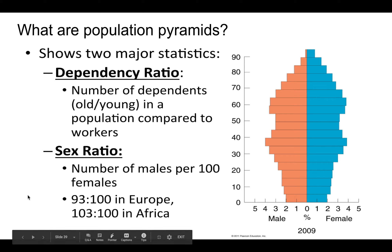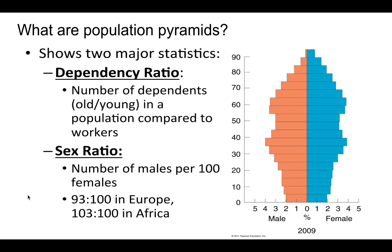Population pyramids show two major statistics. First, the dependency ratio — the number of dependents, both old and young, that depend on the labor force. The labor force is found between ages 15 and 65 in most societies. The dependency ratio depends on the labor force for various social safety net programs such as welfare, food stamps, assisted living, Medicare, and Medicaid.